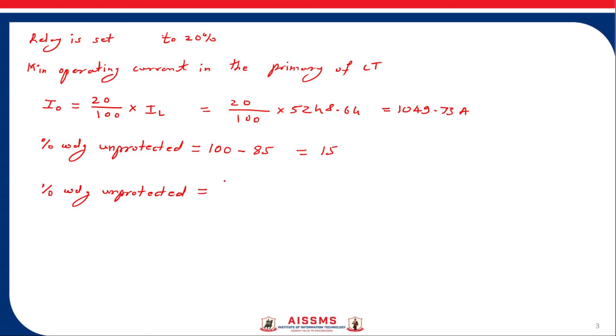So it equals resistance which is connected in neutral to ground, R into this minimum operating current which we calculated in previous step, divided by voltage. But here we must consider per phase voltage. So it equals R into 1049.73 divided by 11000 by root 3.